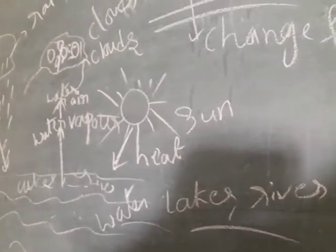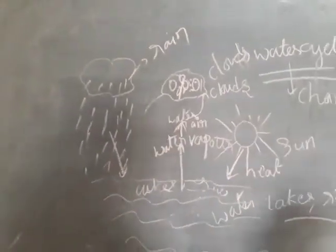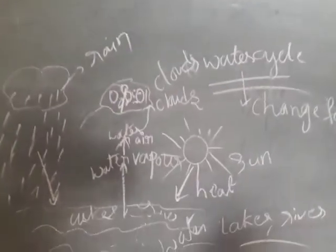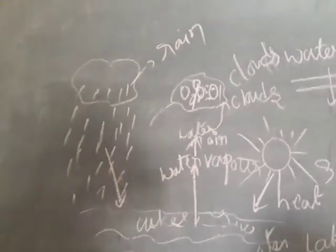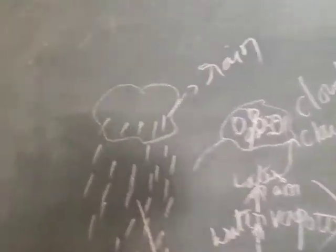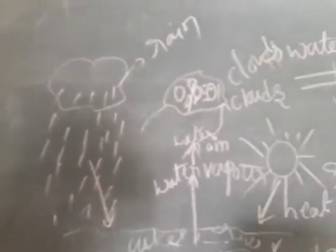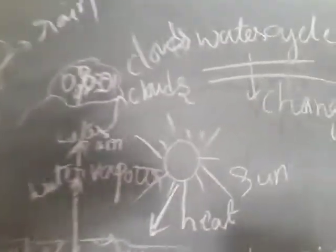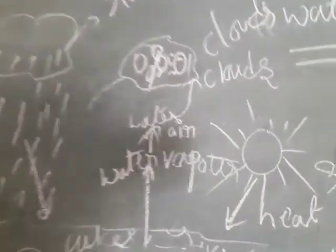Once again: rainwater flows back into the rivers, lakes, ponds and seas. This water gets heated by the sun and again goes up into the air to form clouds. Water vapor changes in the clouds, and then the water drops fall as rain back to earth. This rain water again mixes with rivers, lakes, ponds and seas. This is how the water cycle works in nature.